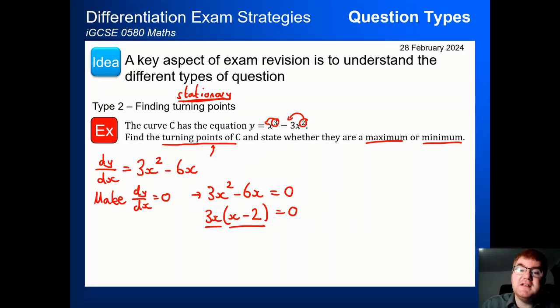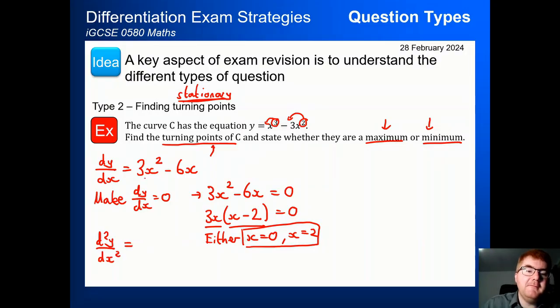And therefore, if these two things multiply to give me 0, either x is 0 or x is 2. So we're just solving our quadratic, a very important skill that we need to do. Now we need to find if they're a maximum or a minimum. So the way we do this is a double derivative. So we differentiate again. So we take what we have here.